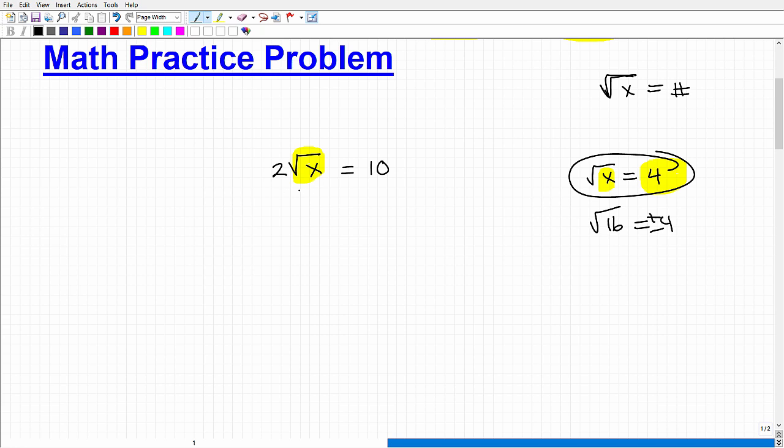Okay, so again, first thing you want to do is to isolate the square root of x part. I'm going to divide both sides of the equation by 2. So I get the square root of x is equal to 5. Again, I could say the square root of what number is 5? Hopefully you know the answer is 25, right? The square root of 25 is 5.